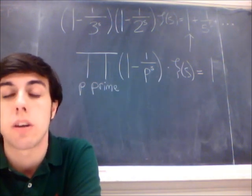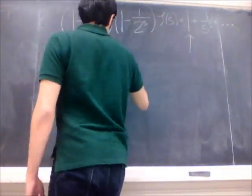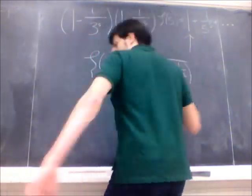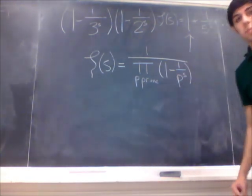We want to isolate the zeta function, so we're going to divide both sides by this product. Which is, of course, equivalent to the expression we were looking for in the beginning.